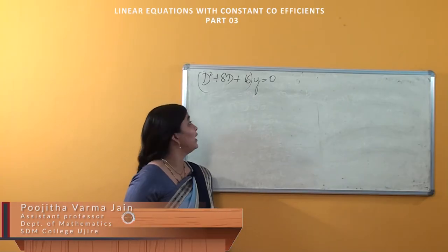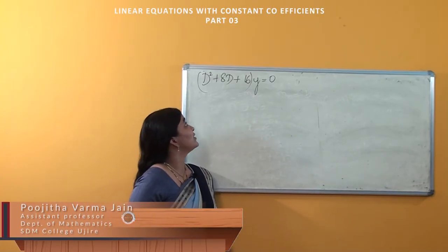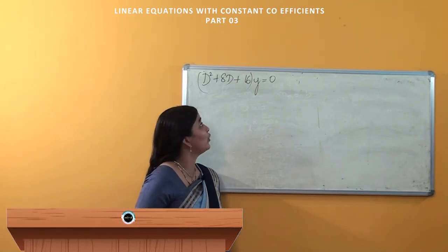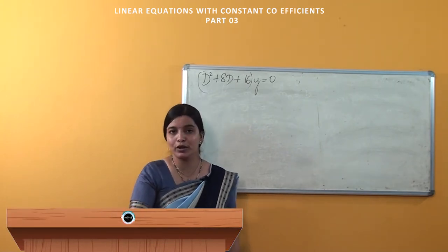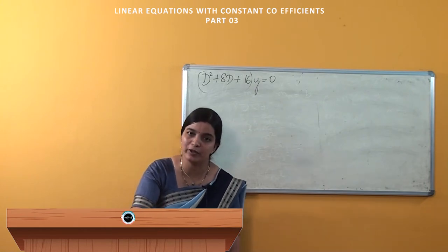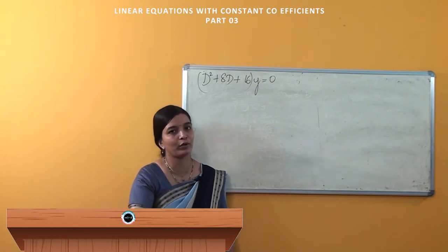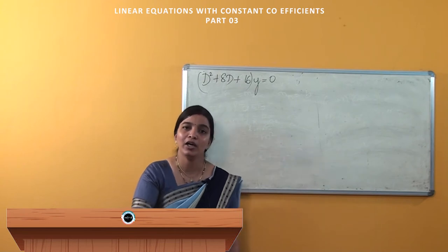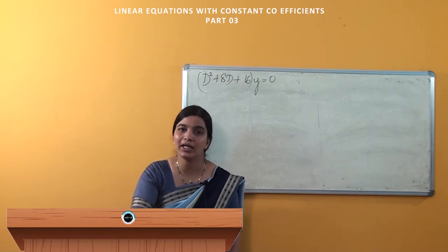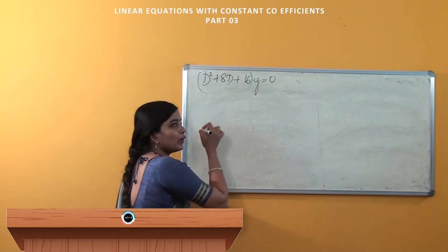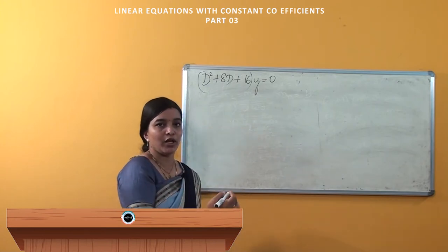The equation is given as d² + 8d + 16 into y is equal to 0. We have to find the roots of it. Before finding the roots, we have to write it in an auxiliary equation, that is f(m) = 0.